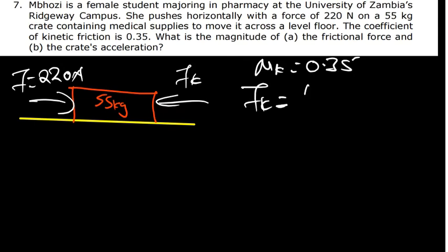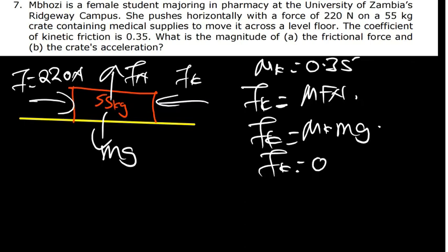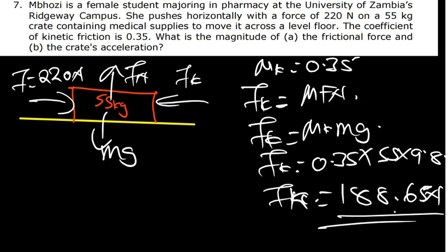To find the friction force: Fk equals mu k times normal force. Since there is no vertical acceleration, normal force equals mg. So Fk equals mu k times mg equals 0.35 times 55 times 9.8, which gives 188.65 newtons. That is the friction force.